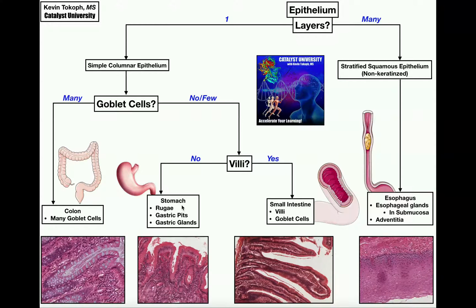In the previous two videos, we looked at the stomach and small intestine. Neither of these tissues had very many goblet cells — they were either non-visible or very few, as we saw in the small intestine. We instead had to look at gastric glands and pits to identify the stomach, or for the small intestine, we had the presence of finger-like projections called villi. The stomach and small intestine are probably the two most difficult to identify. The esophagus was the easiest, but the colon or large intestine is actually just as easy as the esophagus, despite the fact that it also has simple columnar epithelium.